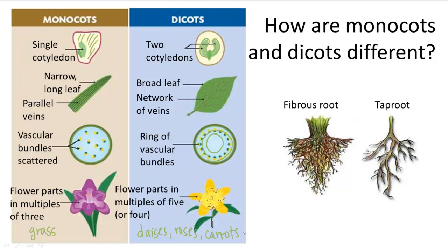So just briefly remember: single cotyledon, narrow long leaf, vascular bundles, multiples of three — and two cotyledons, broad leaf, rings, and multiples of four or five.